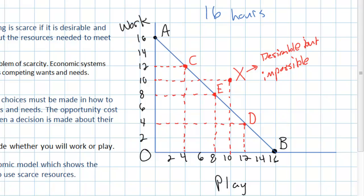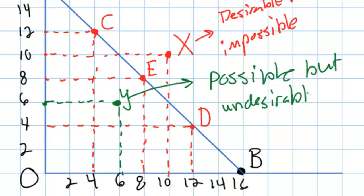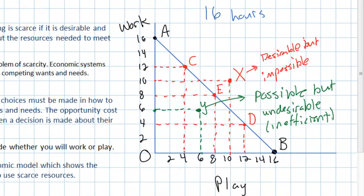What if an individual only spent 6 hours working and also only 6 hours playing? We'll call that point Y. A point such as Y is clearly possible but undesirable — it represents an inefficient use of an individual's time. Someone who spent only 6 hours working and 6 hours playing would have an additional 4 hours of complete downtime. While that may sound appealing, it's considered inefficient because those hours are not being put towards productive use, given that both play and work are productive uses of time.